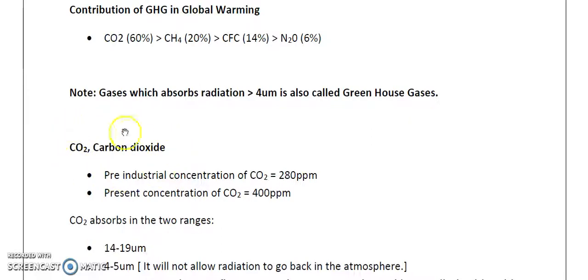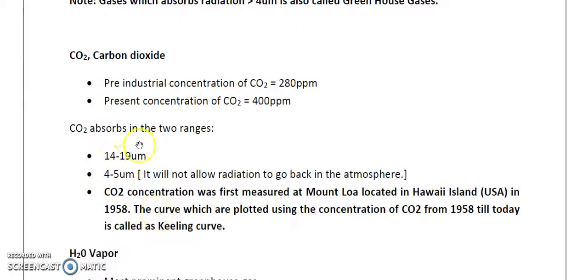Now dealing with CO2 in detail: the pre-industrial concentration of CO2 was about 280 ppm. The present concentration as of 2017 is around 400 to 410 ppm. Regarding absorption, CO2 absorbs in two ranges: the first is 14 to 19 micrometers, and the second is 4 to 5 micrometers.